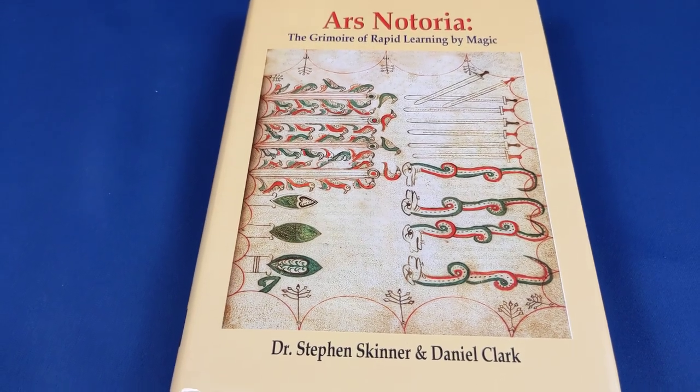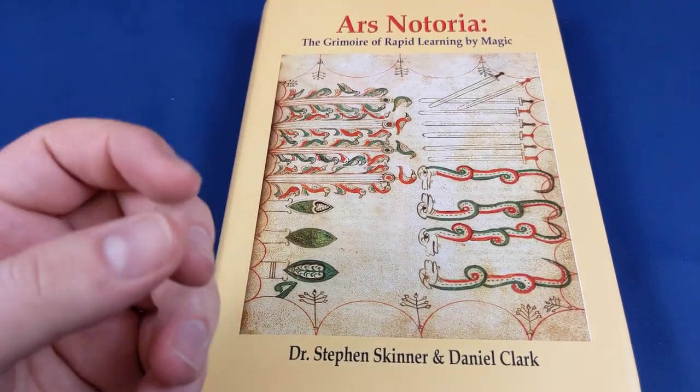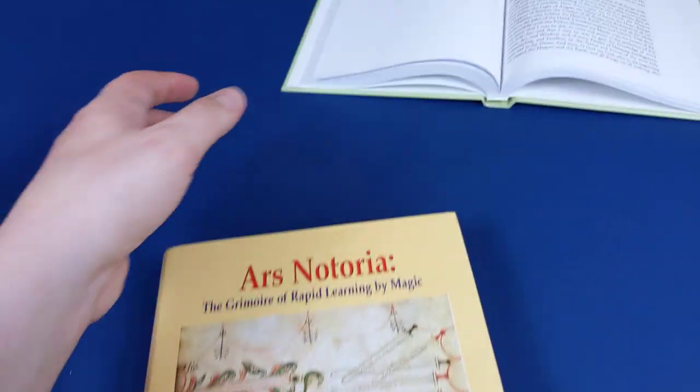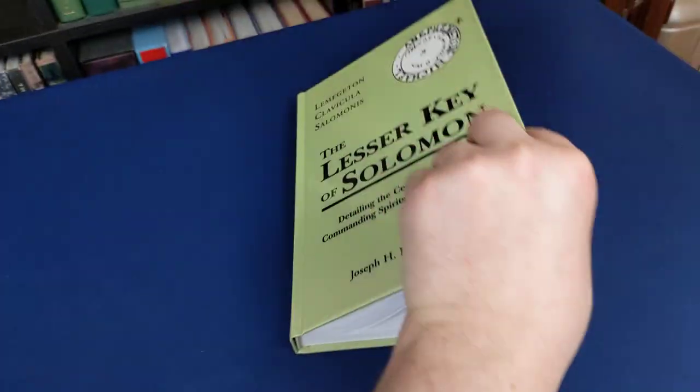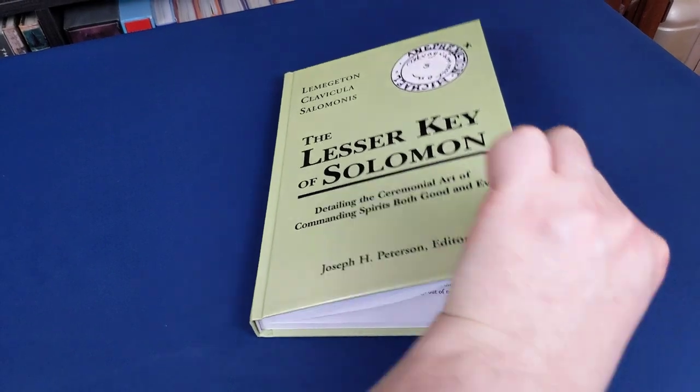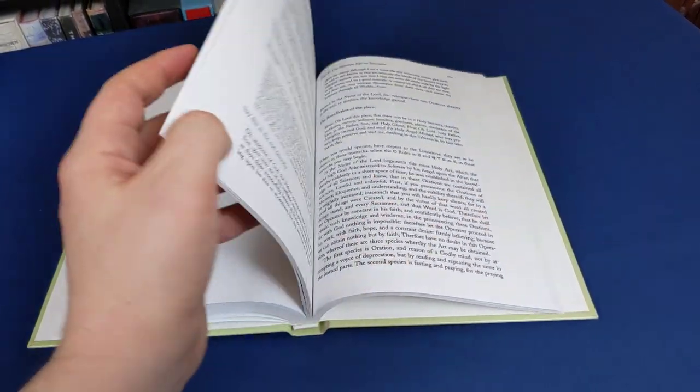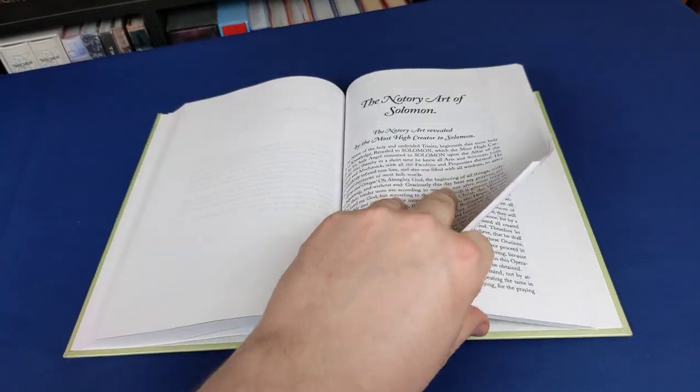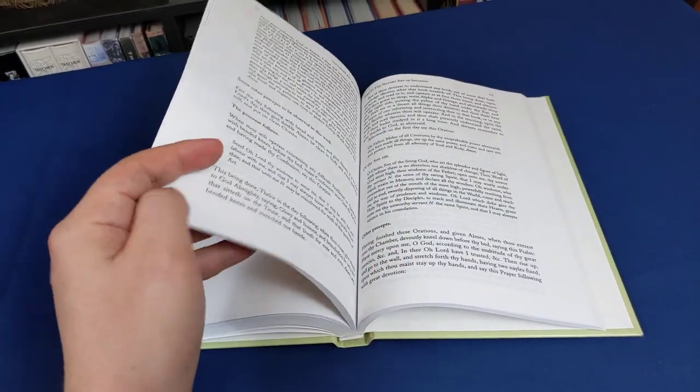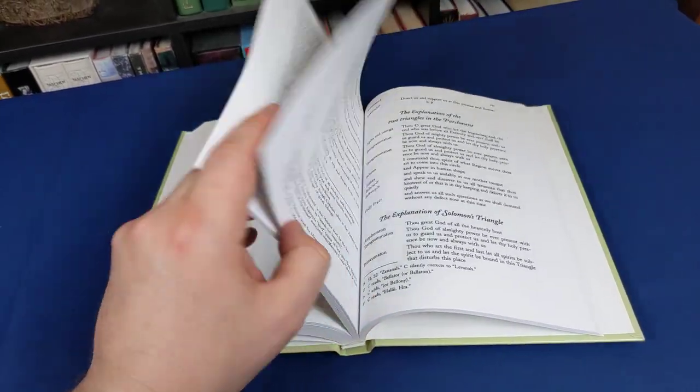The Ars Notoria is one of the books that is normally bundled in with the Lemegeton. In Joseph Peterson's edition it's added at the end. It's traditionally added as the fifth book of the Lemegeton, also known as the Lesser Key of Solomon.